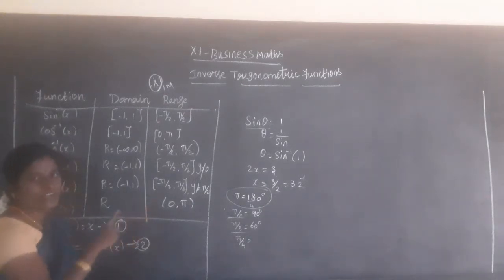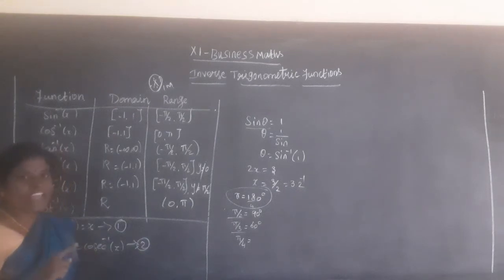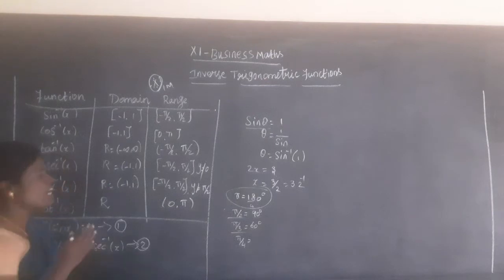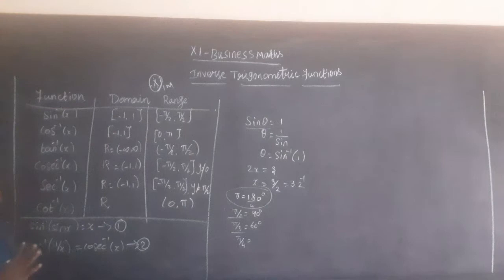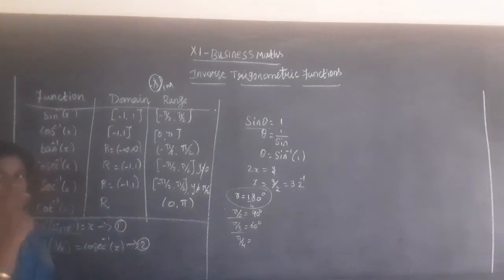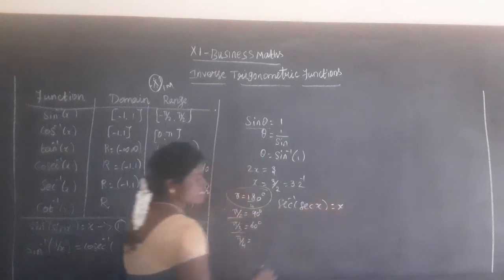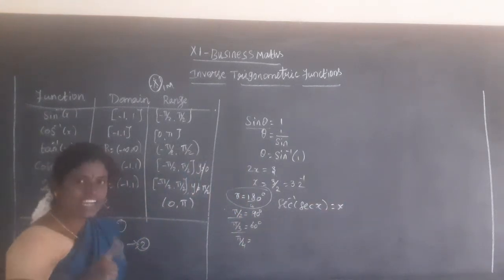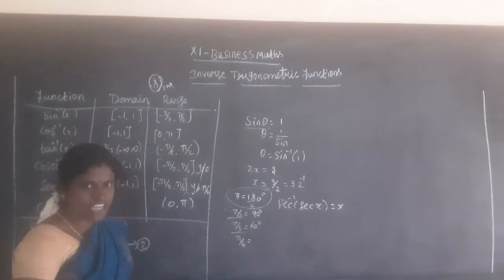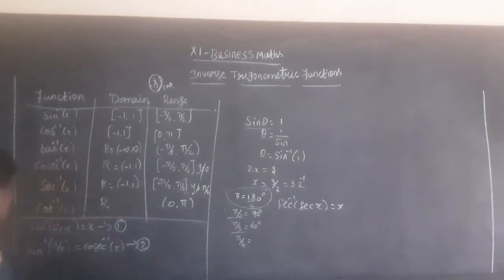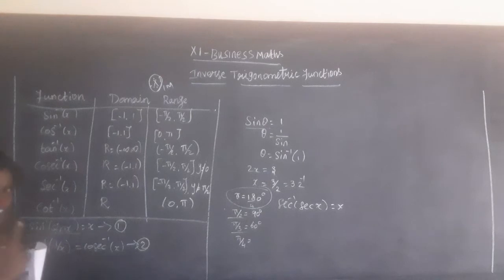The range of cosecant inverse is the closed interval minus π by 2 to π by 2, where y is not equal to zero. This is the first property: the inverse of a function composed with the function gives the value x. For example, sin inverse of sin x equals x, cos inverse of cos x equals x, tan inverse of tan x equals x.